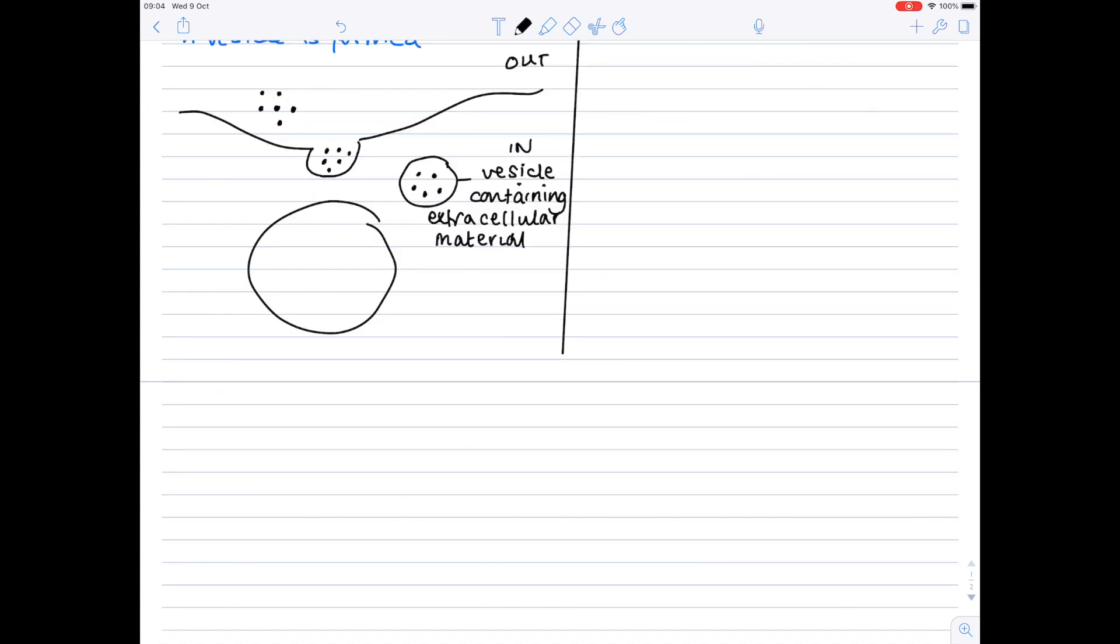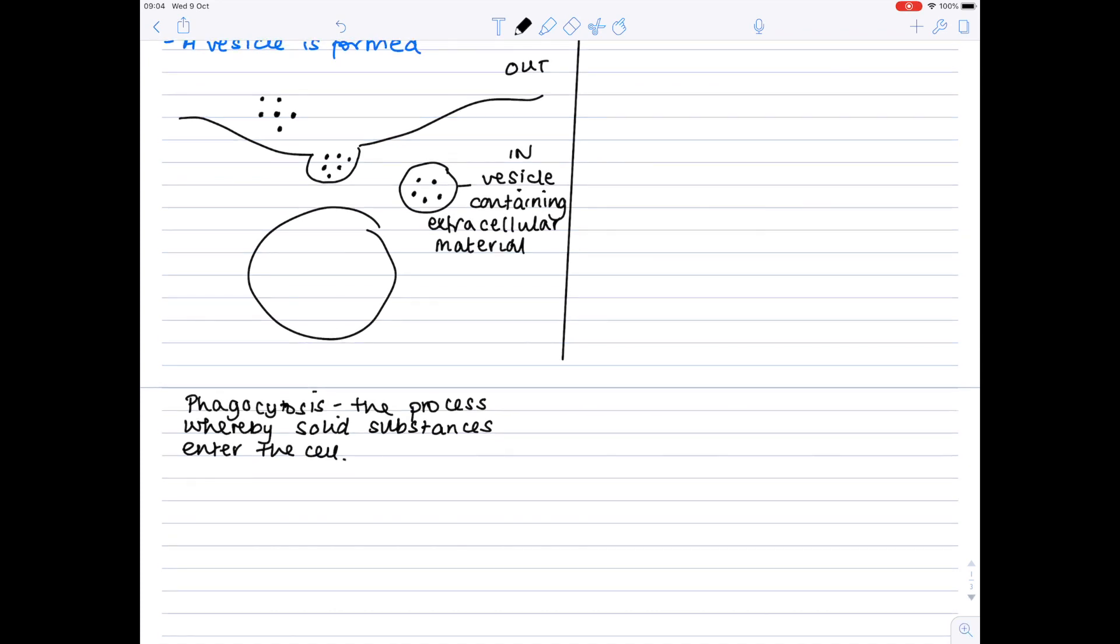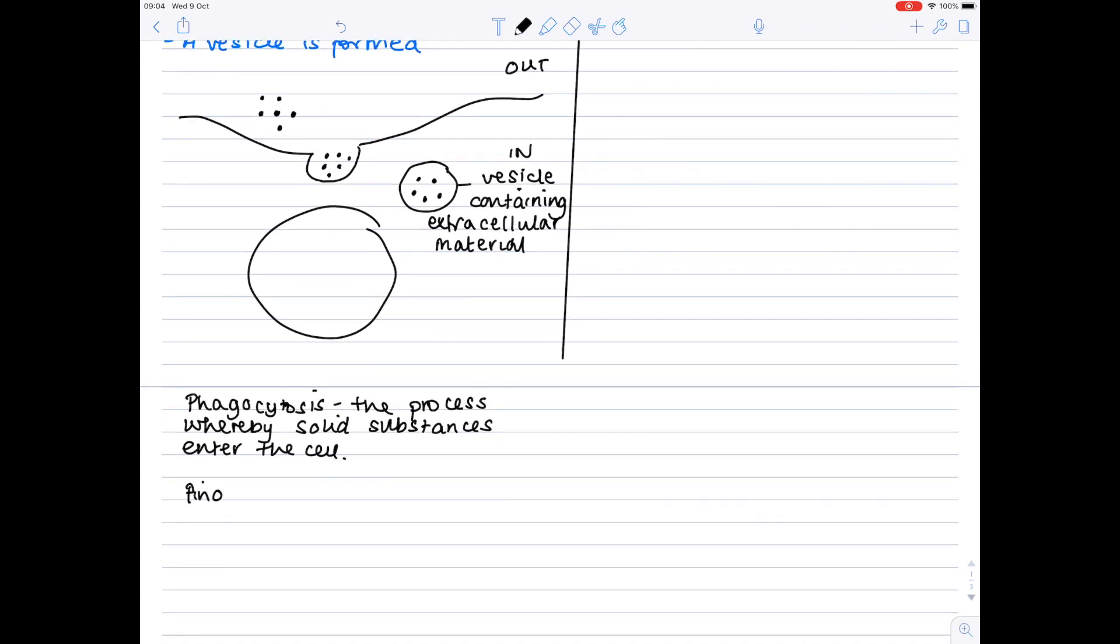Now there are two main types of endocytosis. The first one is phagocytosis, which is the process whereby solid substances enter the cell. And the second is pinocytosis, which is the process whereby liquids or dissolved substances enter the cell.